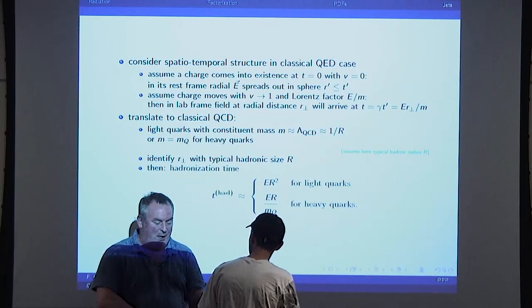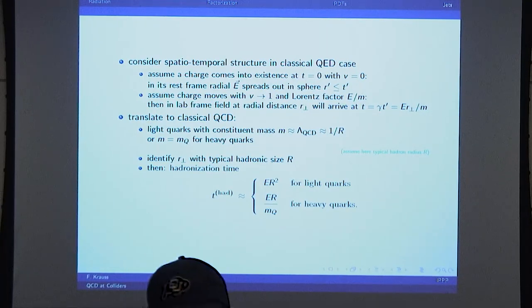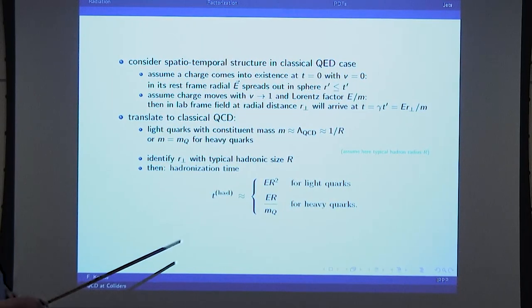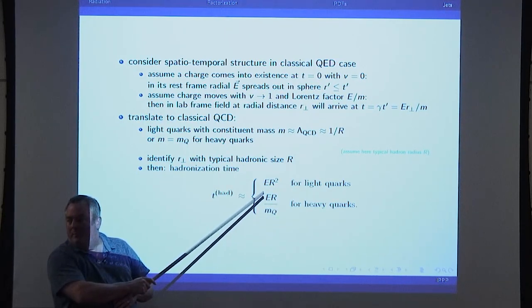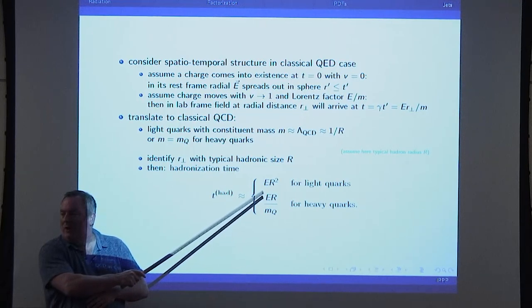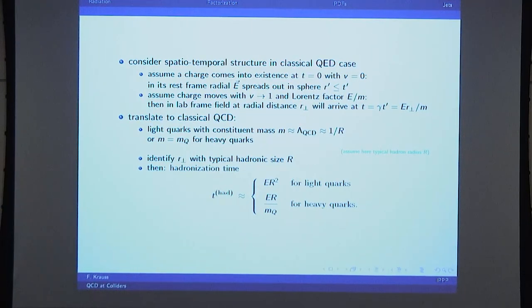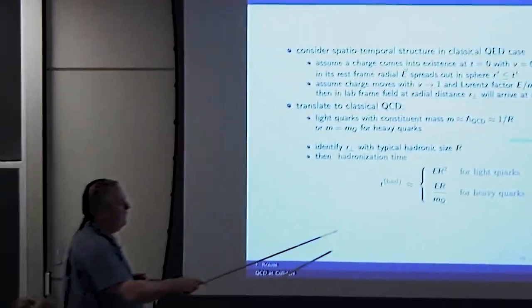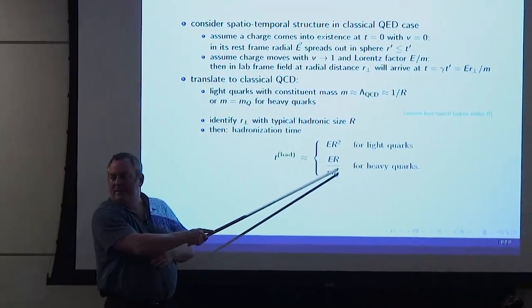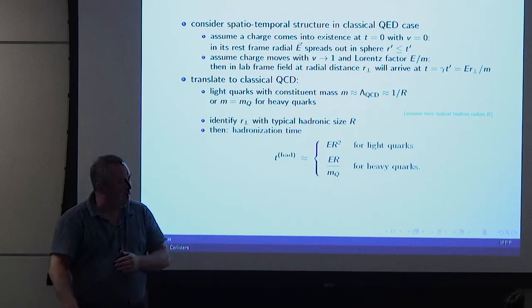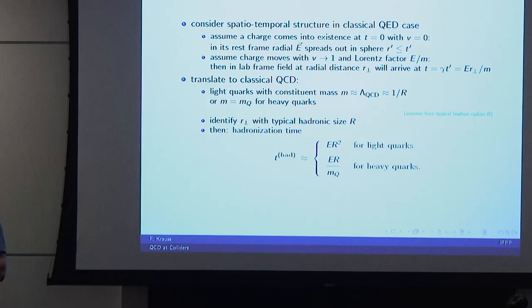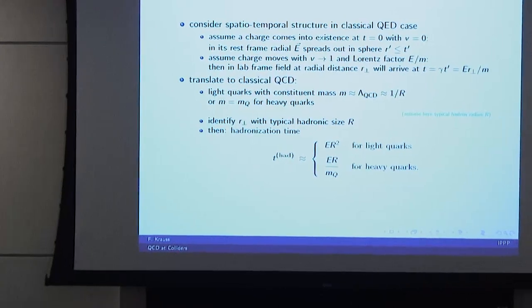So after about one Fermi, these guys will hadronize. For heavy quarks, typically when you produce them the energy is relatively close to the mass. So unless you have a massive boost factor — even if you produce a top quark with one TeV, the factor in front is just a factor of 6 in front of R — whereas for light quarks it's a bit better. These guys hadronize in a different way basically because the heavy quarks are slower — it's just a measure of how fast or slow they are.